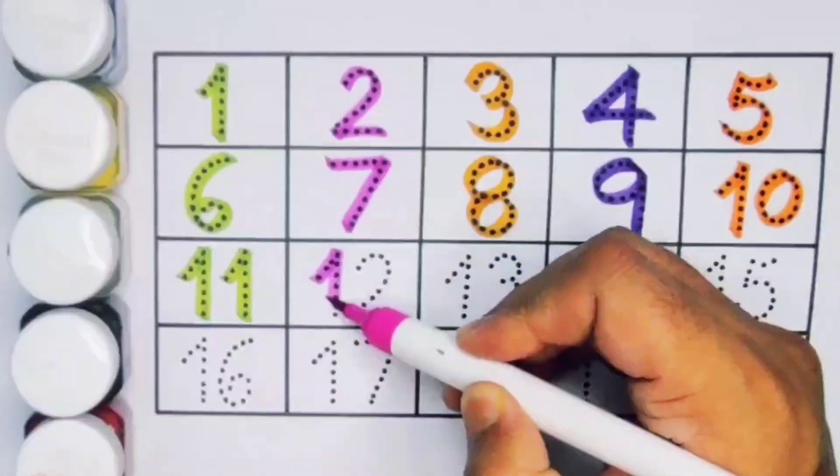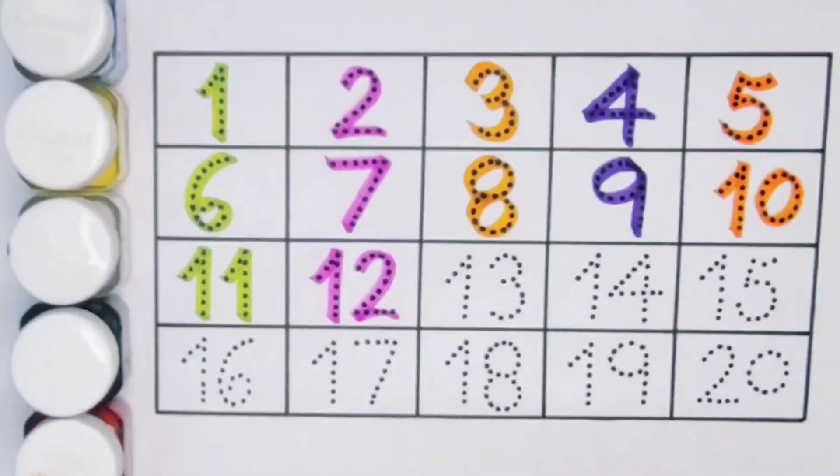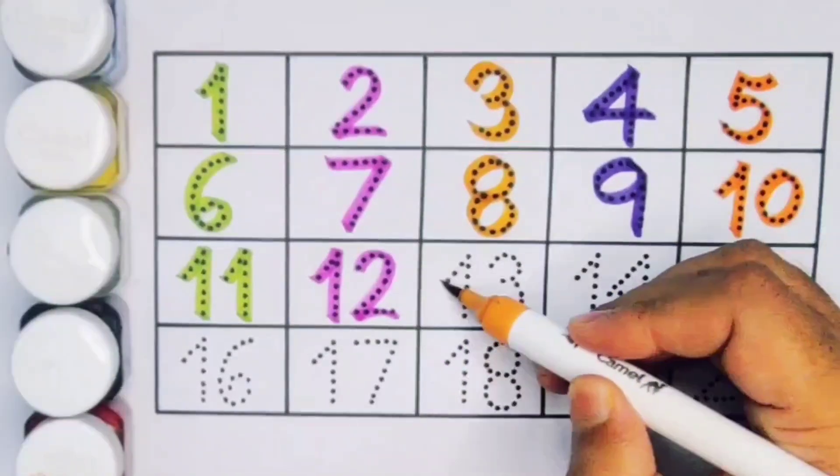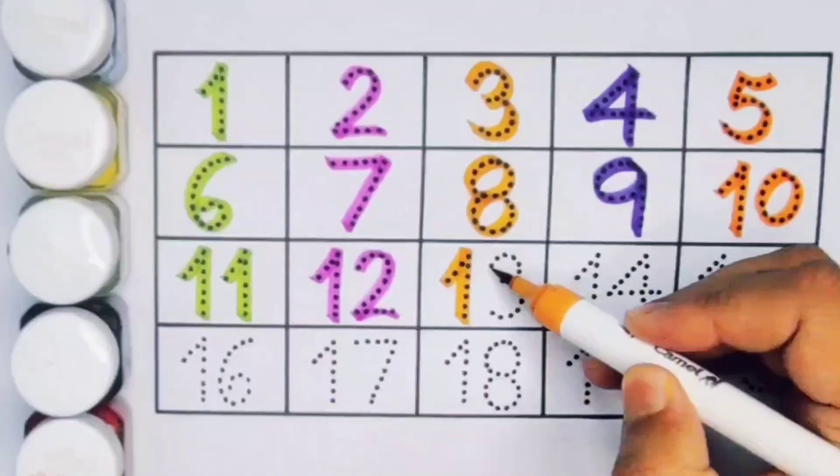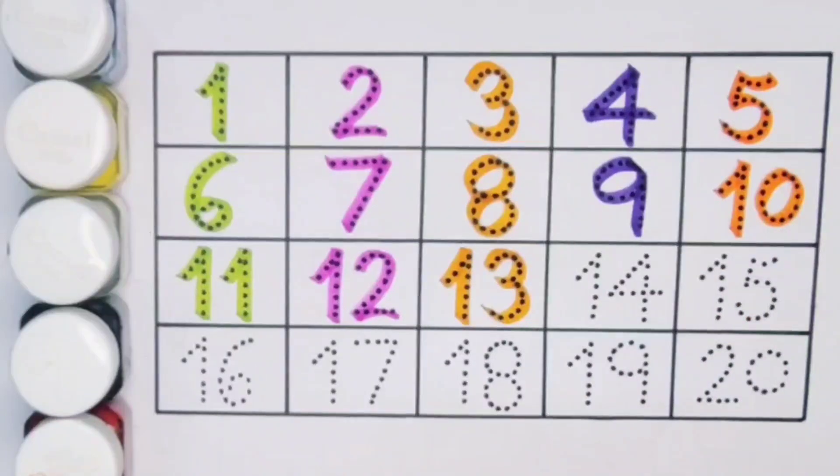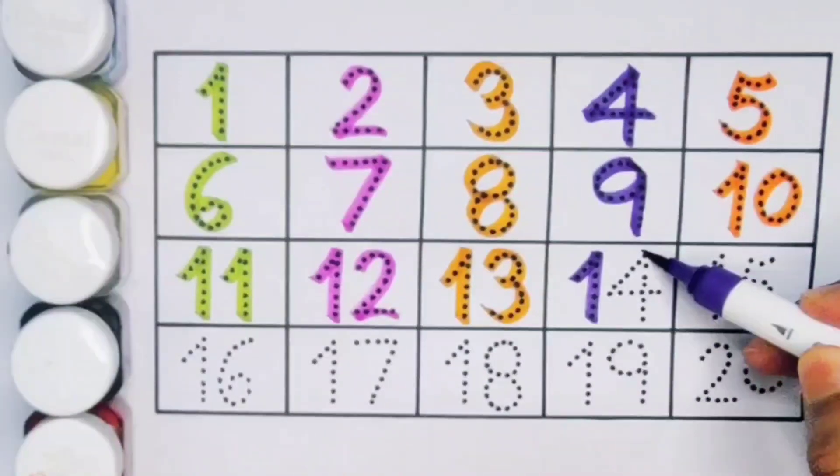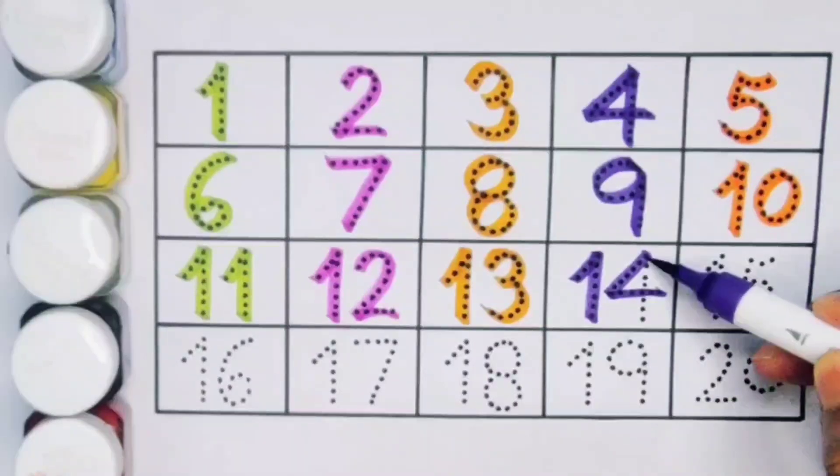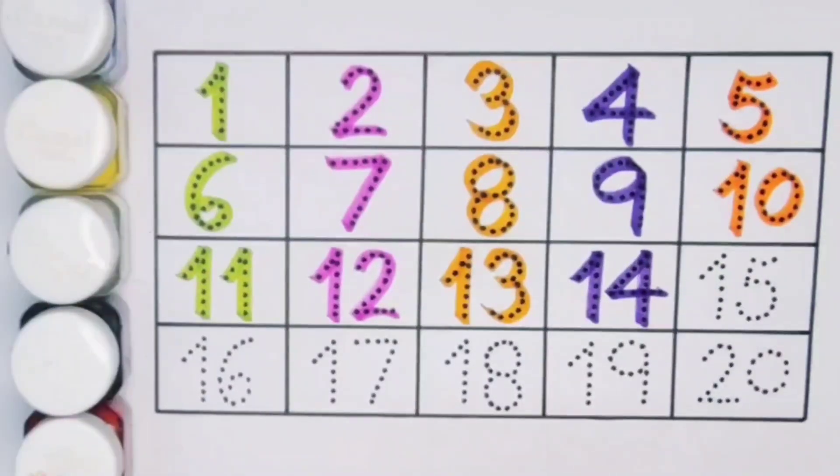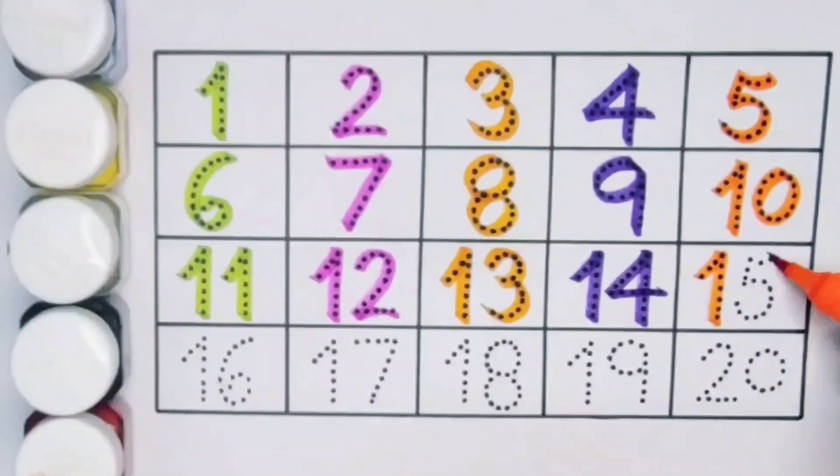Next, twelve, one two twelve, number twelve. Next kids, thirteen, one three thirteen, number thirteen. Next kids, fourteen, one four fourteen, number fourteen. Next kids, fifteen, one five fifteen, number fifteen.